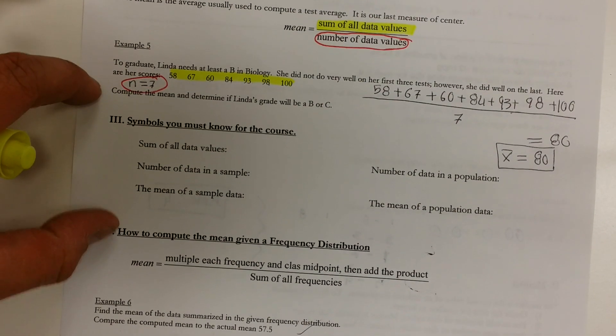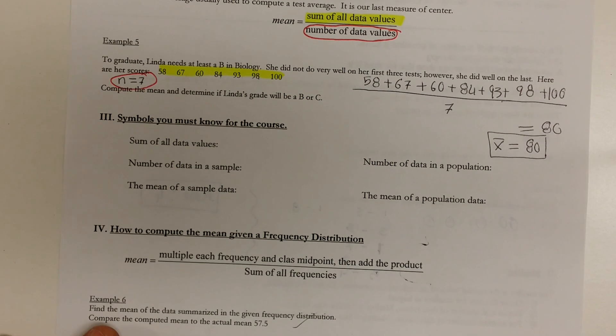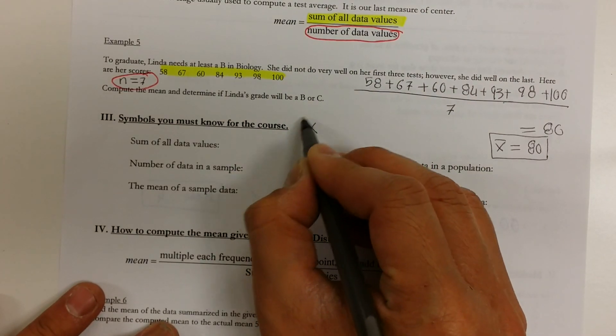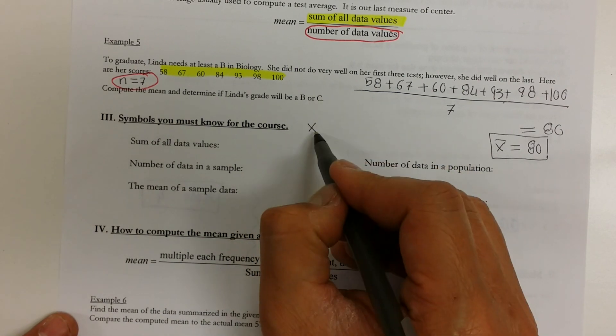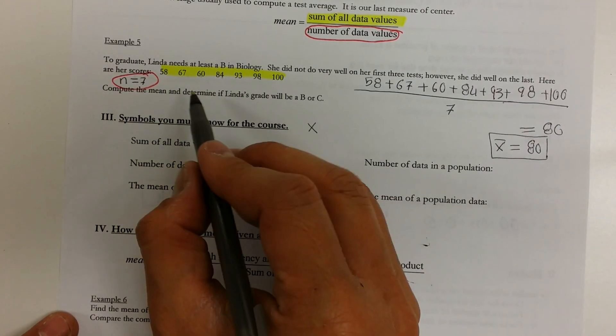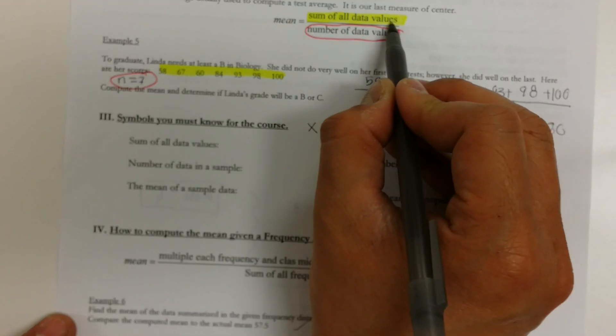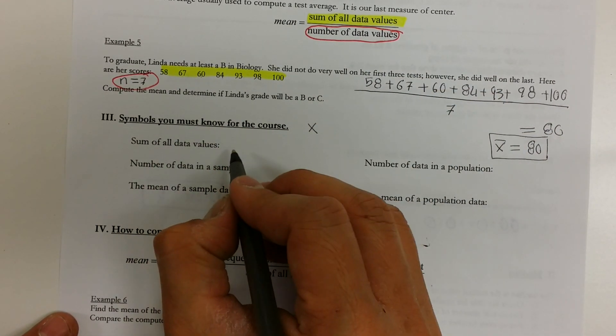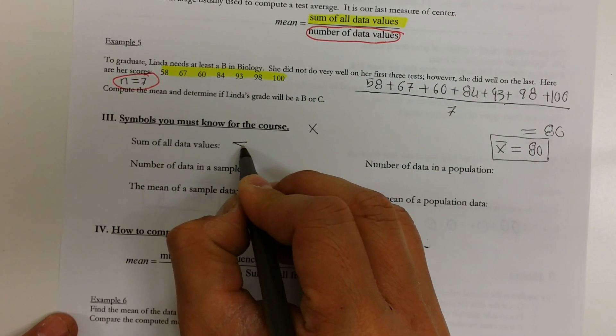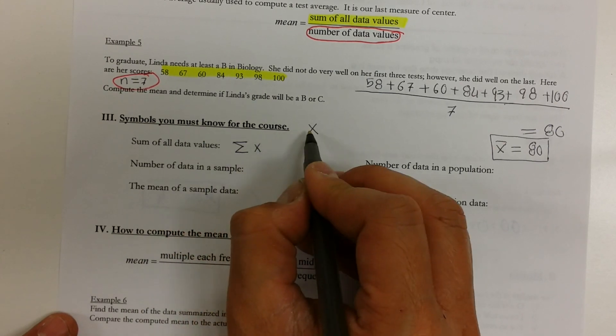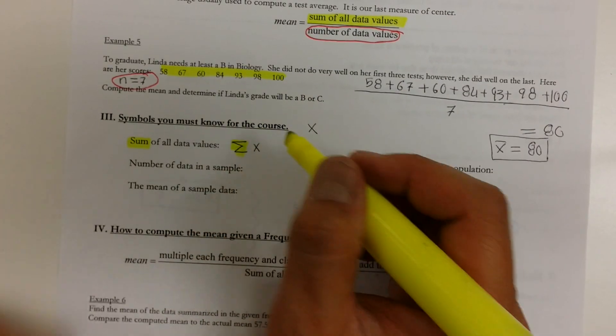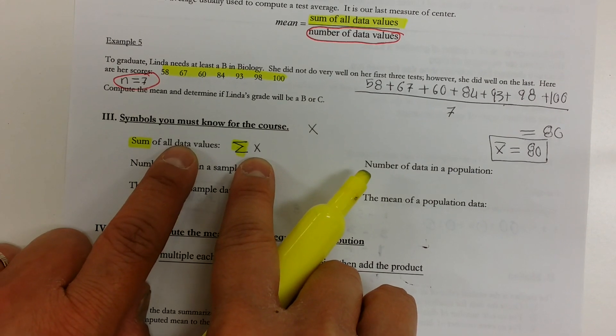Alright, throughout this course, we are going to use a lot of symbols. And I want you to know some of these symbols. First of all, the symbol X is going to represent your unknown, right? So X could represent her test scores because before I add them up, I didn't know what they were. And what I did was I sum up the data values. Another way we used to express summing the data values is we go sum. That's the symbol for adding the data values because those are the data values.